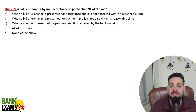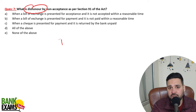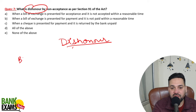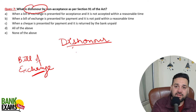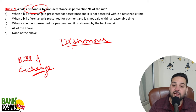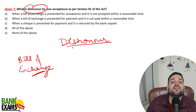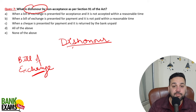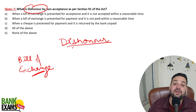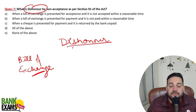What is dishonor by non-acceptance as per Section 91 of the Act? A bill of exchange can be dishonored in two ways. In a bill of exchange, the drawer sends the bill to the drawee, who must accept it — for example, agreeing to make payment after two months. If the drawee refuses to sign or accept the bill, that is dishonor by non-acceptance. If payment is not made on the due date, that is dishonor by non-payment.